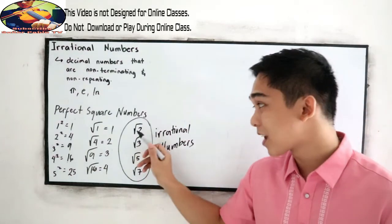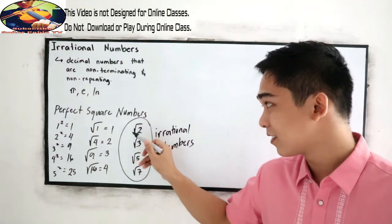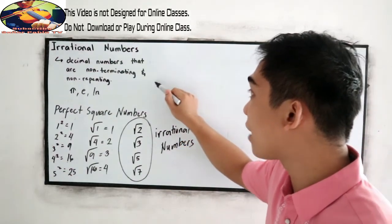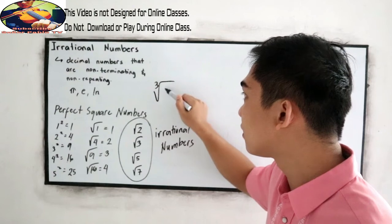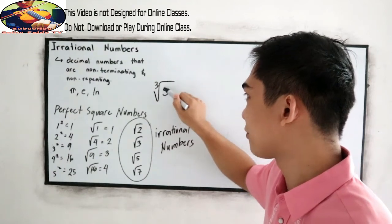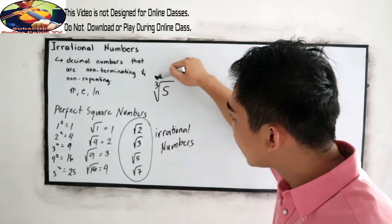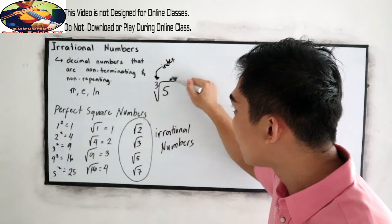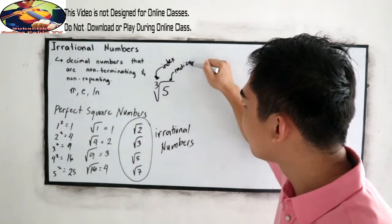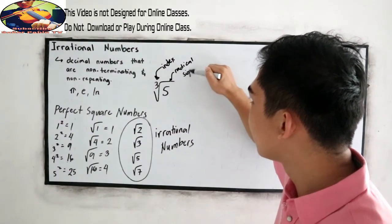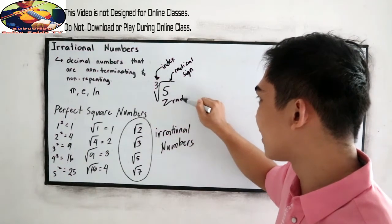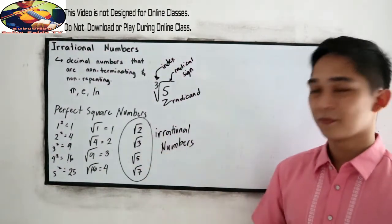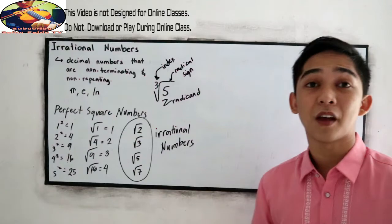Let us familiarize the radical sign. For example, cube root of 5: the small number on the upper left is called the index, the symbol itself is the radical sign, and the number inside is called the radicand. Those are the parts of a radical expression.